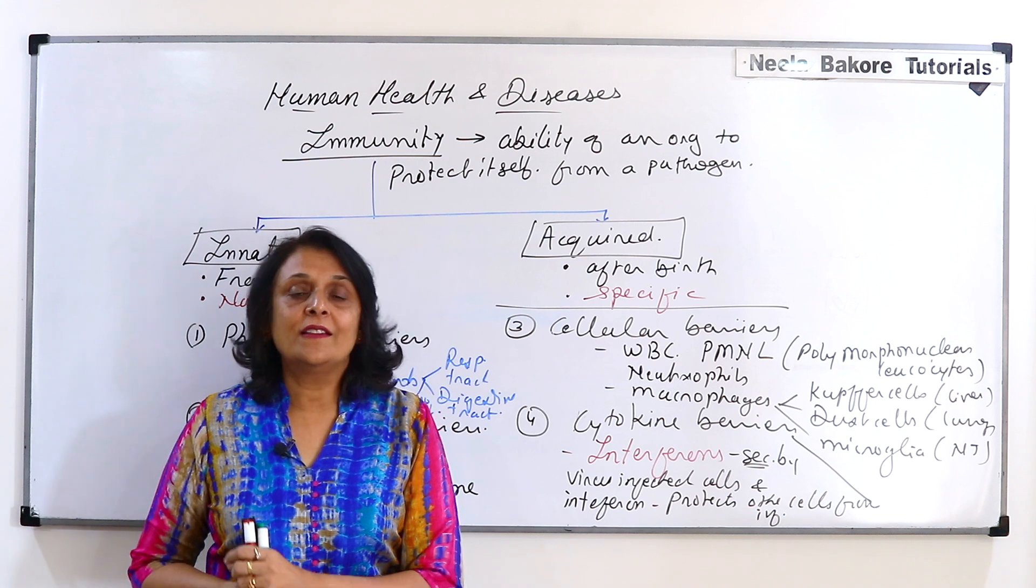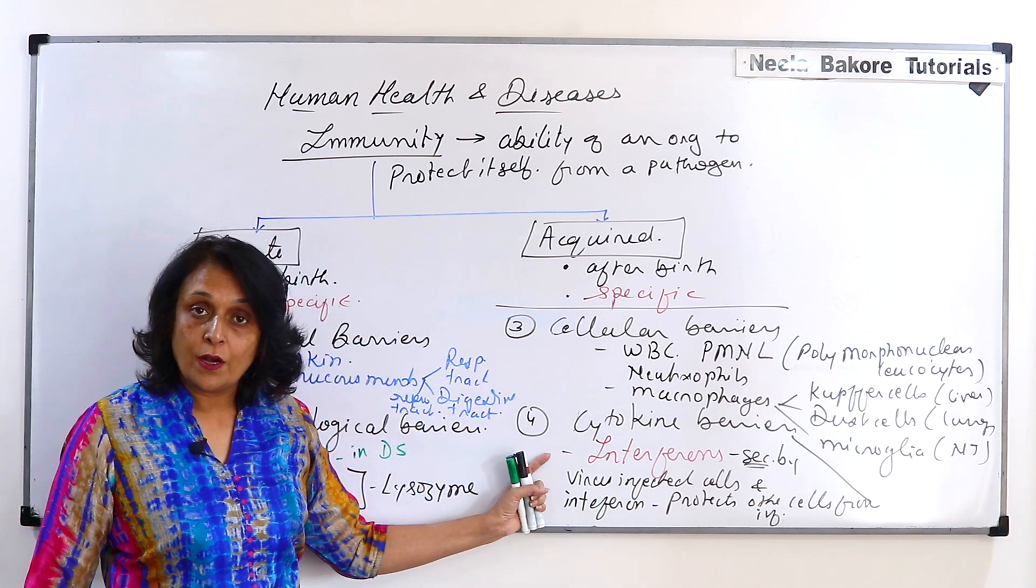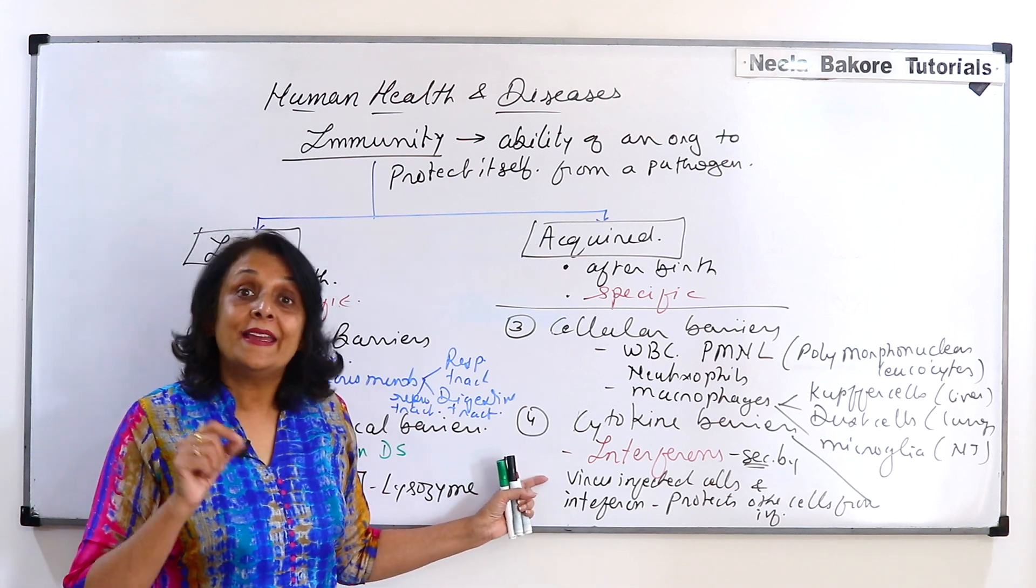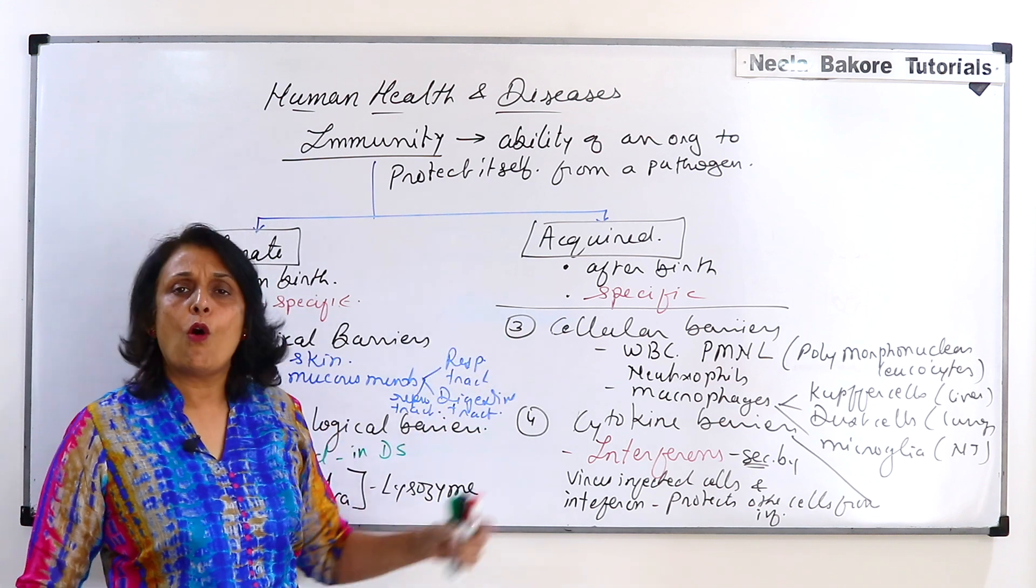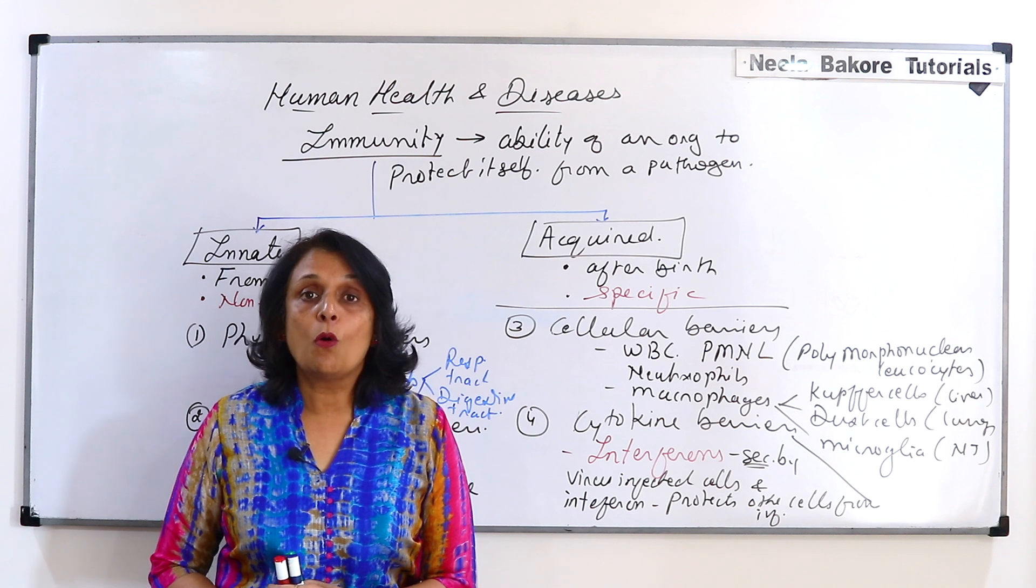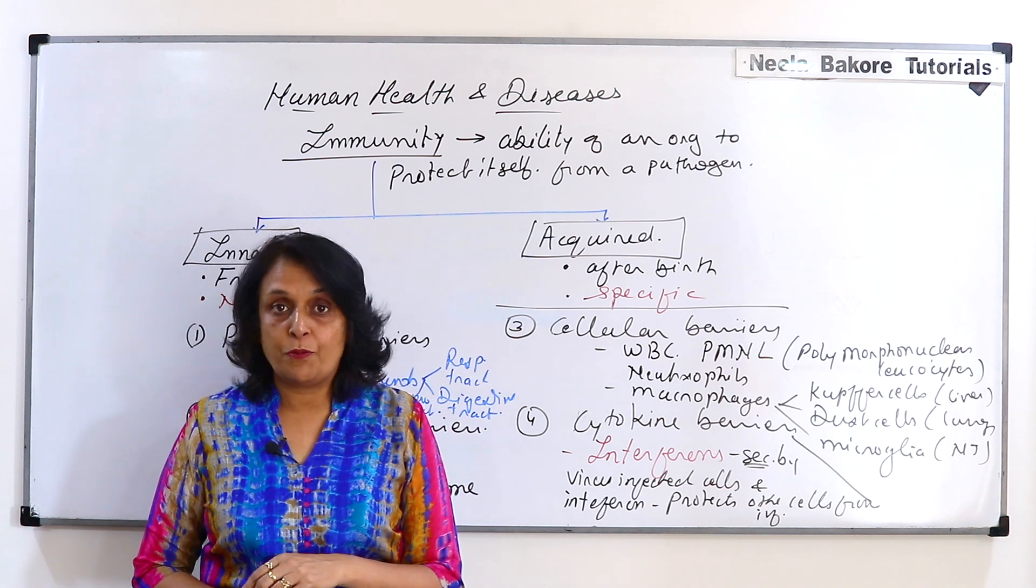That means the chances of other cells getting infected would be less due to interferon. And these interferons are secreted by virus infected cells. And we have all these four things from our birth. So this is called innate immunity. We are born with this type of immunity.